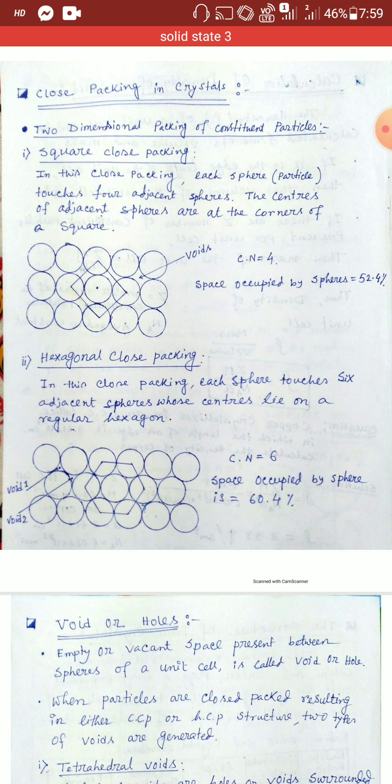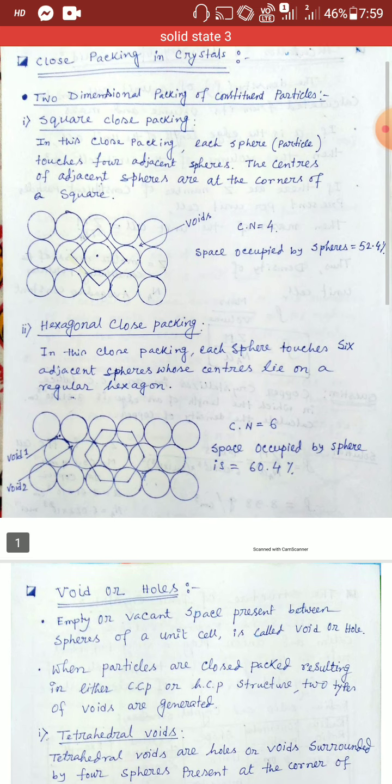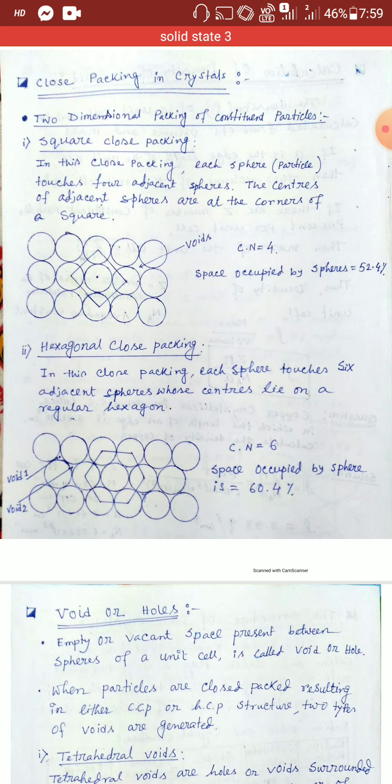The second type is hexagonal close packing, also a two-dimensional close packing with arrangement along the x and y axes, but the arrangement is different from square close packing. In square close packing, the particles in each row are placed directly in line with those in the row below, but in hexagonal close packing, particles are not arranged in the same way.